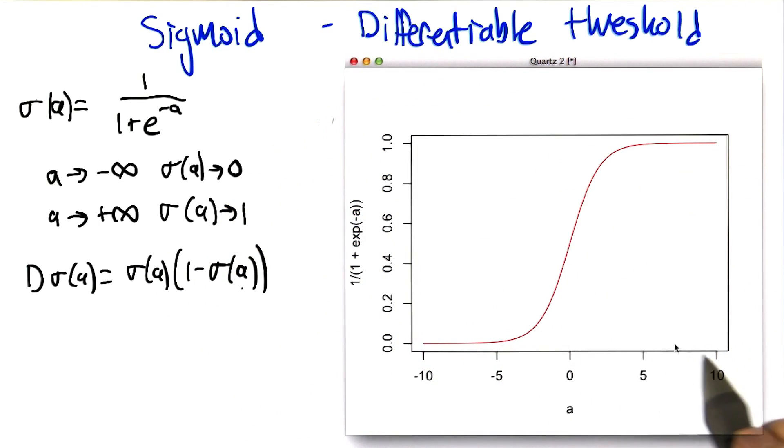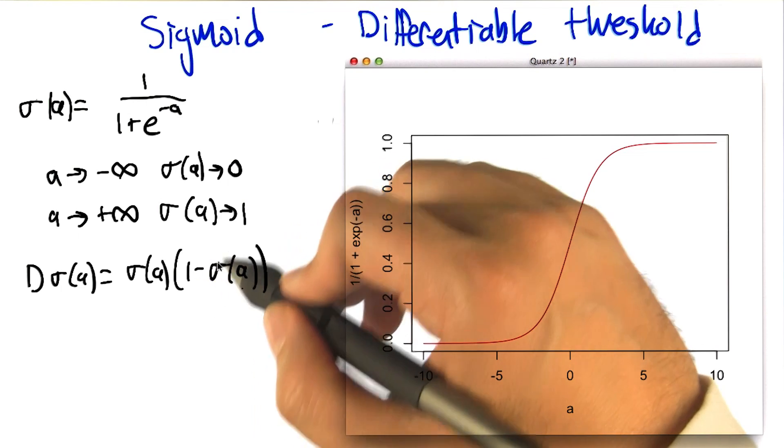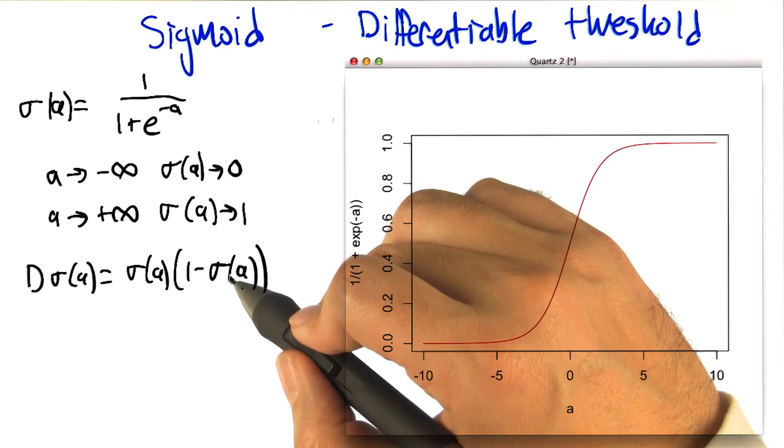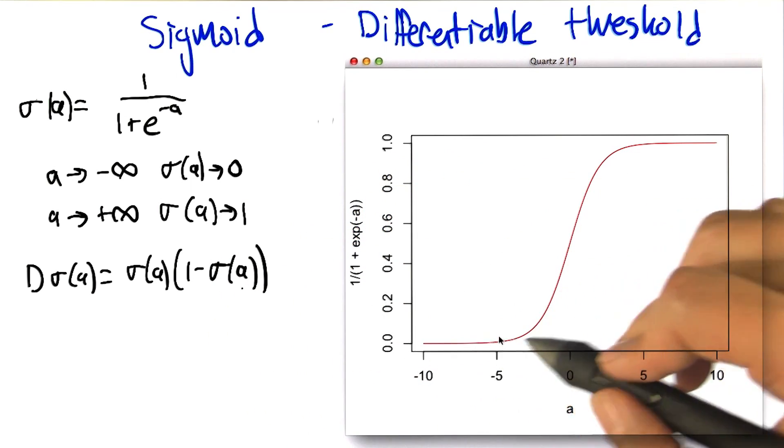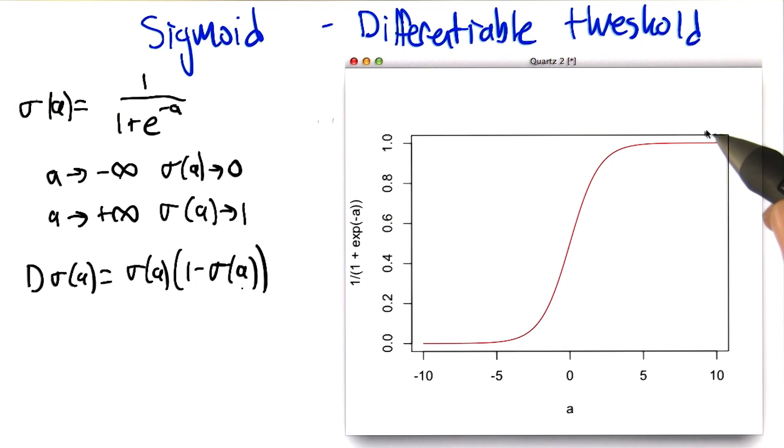Whereas the derivative, as you get to very large a's, that's like sigma's going to one. And you get one times one minus one. So essentially one times zero. So you can see the derivatives flatten out for very large and very negative a's.